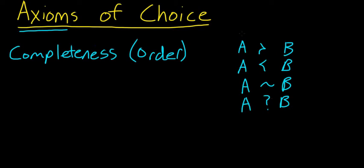In order to satisfy the axiom of completeness, they have to be able to make a choice between one of these three options, saying that one bundle is better than the other, it's worse, or they're the same.